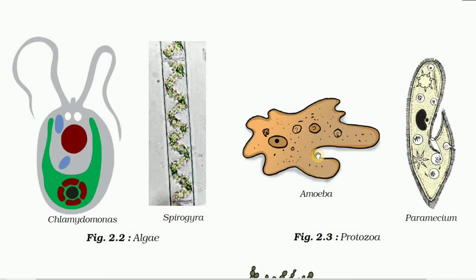Chlamydomonas and spirogyra are examples of algae. These are simple plant-like organisms which are usually aquatic in nature. They contain a cell wall and chlorophyll and can make their own food by photosynthesis. Algae can be unicellular or multicellular. Common examples are chlamydomonas, spirogyra, and diatoms. They are mostly living in a colony, but you can also find them in a pond in unicellular form.